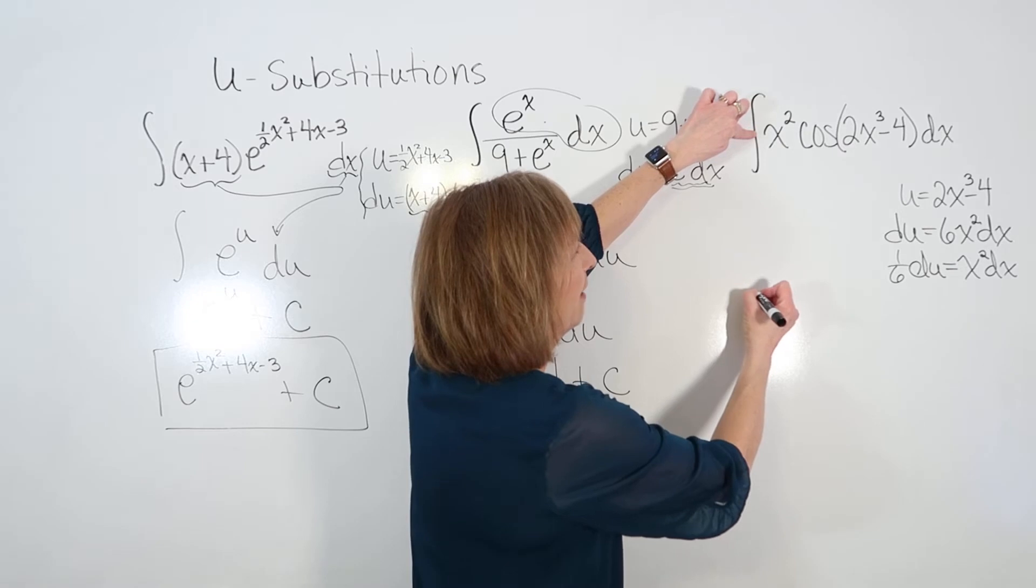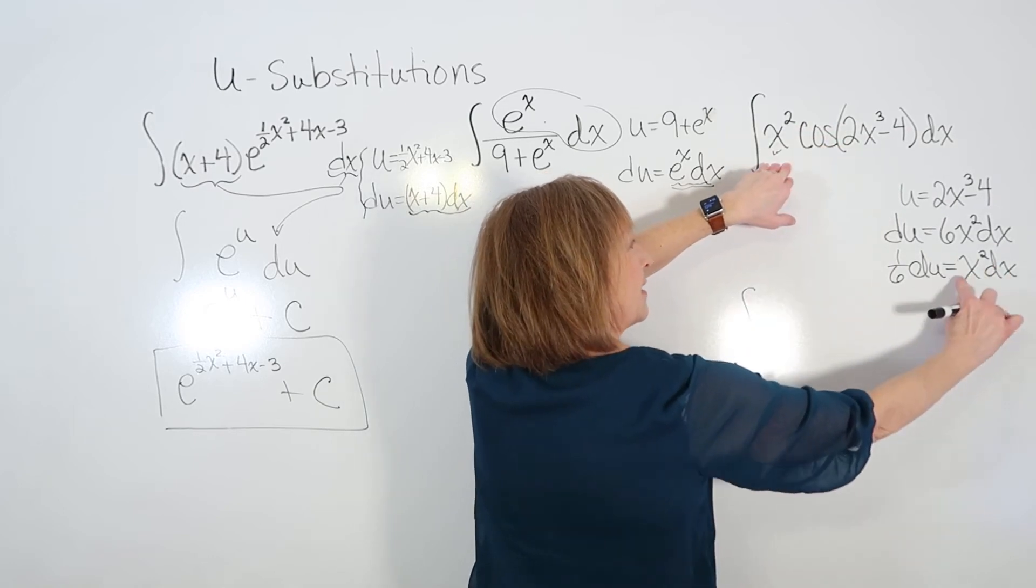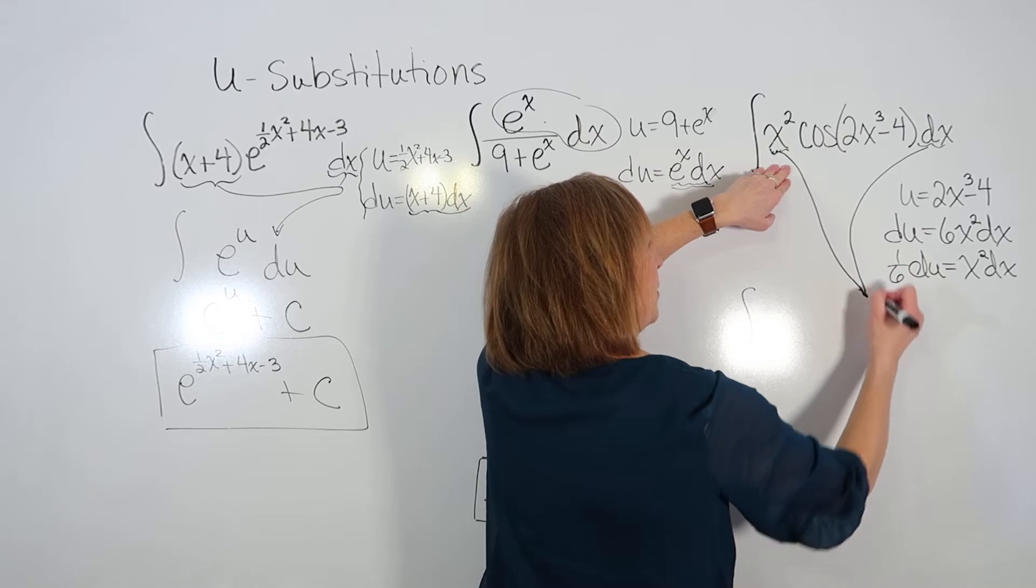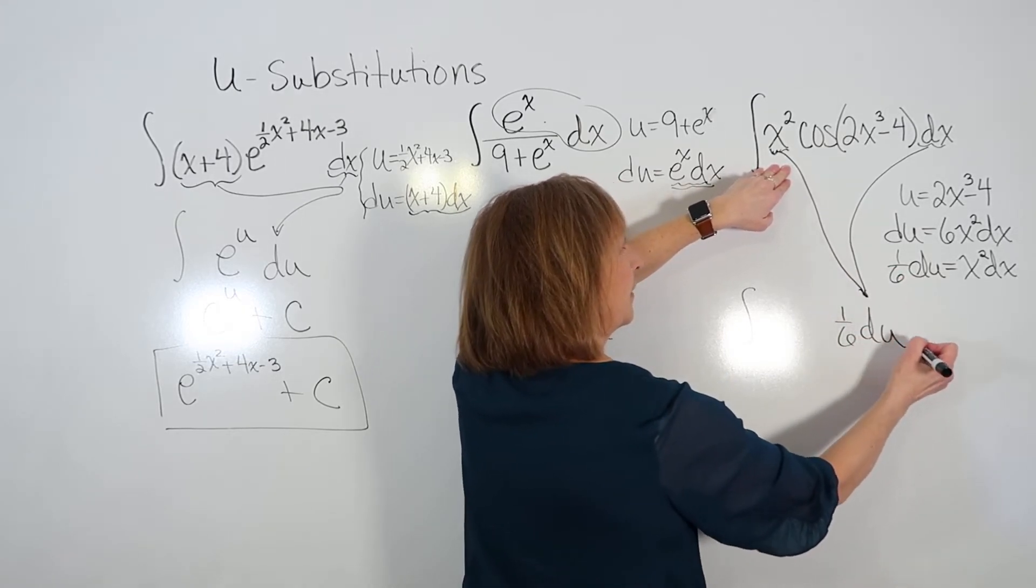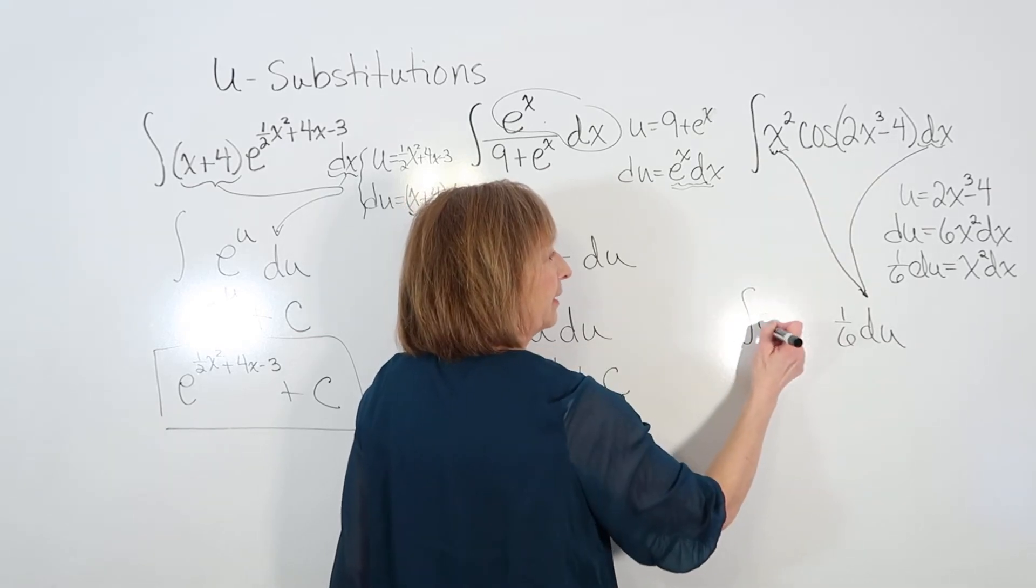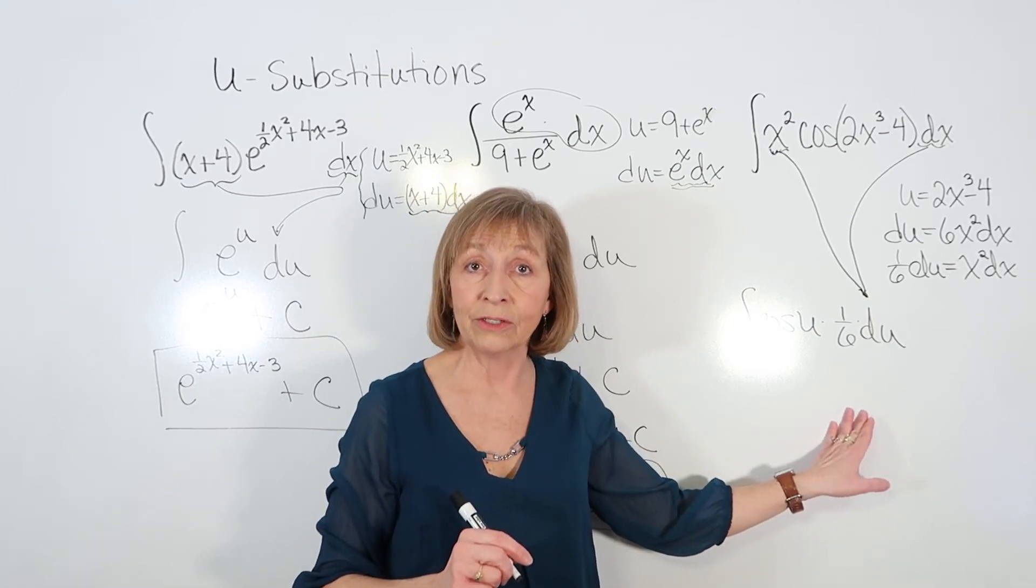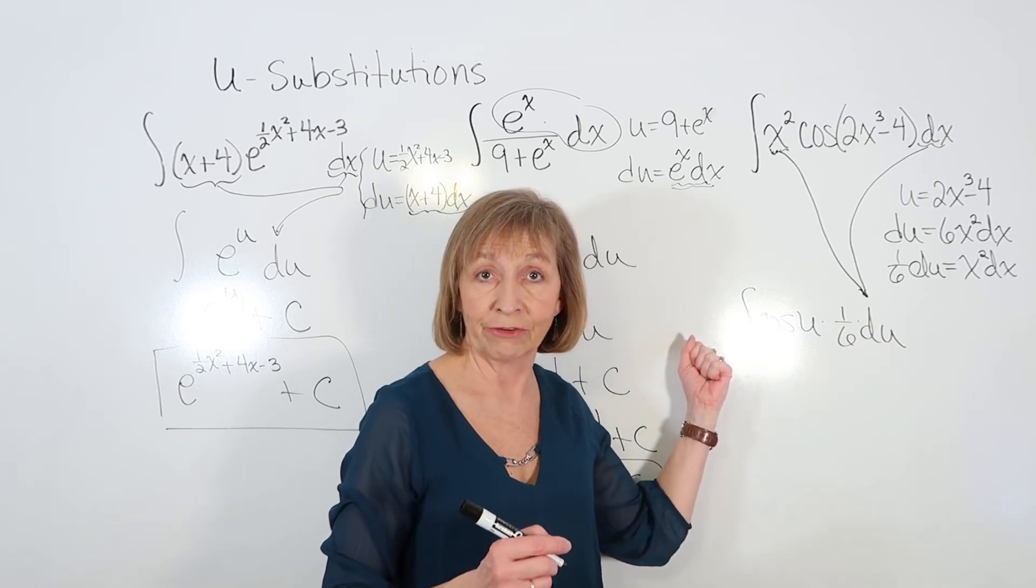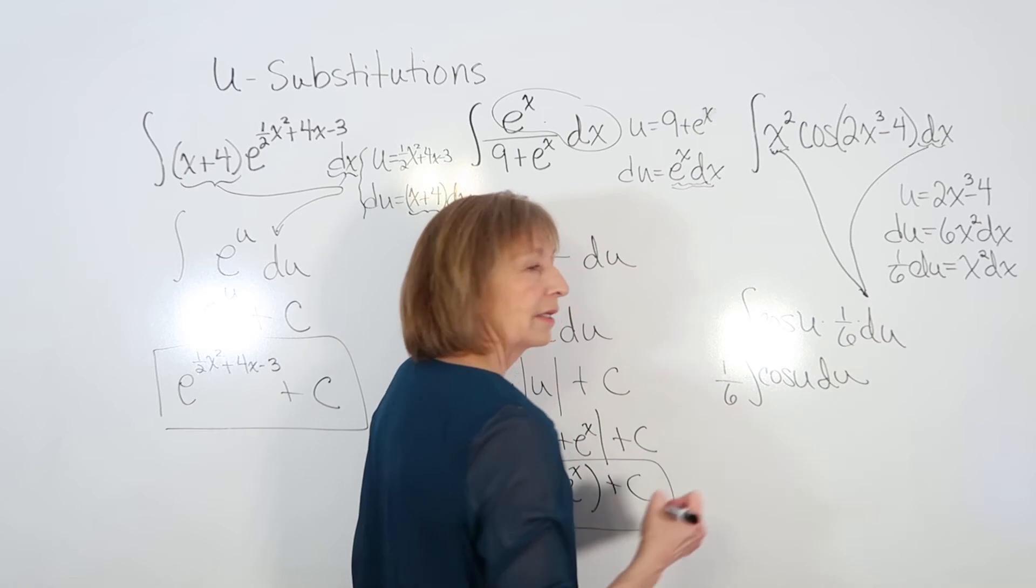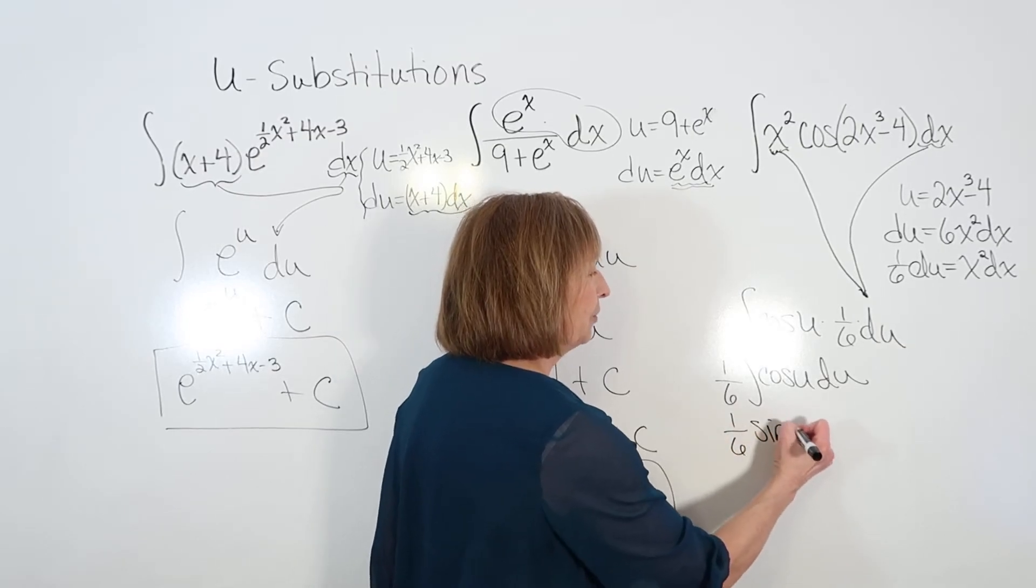Now let's make our replacements. We have our integral. The x²dx, those two combined, see the x²dx, that'll come out and a 1/6 du goes in its place. So those two combined get replaced by a 1/6 du. And then the u is going to go in for the 2x³ minus 4. So then we have cosine of u. And this 1/6 factor, remember there was a rule with indefinite integrals that we can bring constant factors out in front of the integral. So I have 1/6 times the integral cosine u du. The integral of cosine u is sine u. So we'll have 1/6 sine u and then plus c.